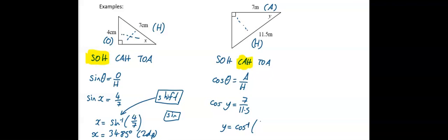So y equals cos to the minus one of 7 divided by 11.5. You do that in one go on your calculator: cos to the minus one of 7 over 11.5, close the bracket, press equals.